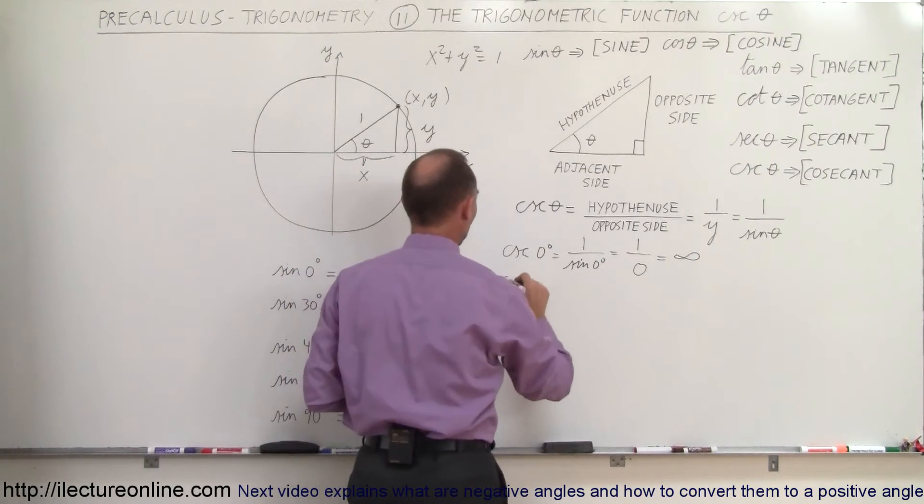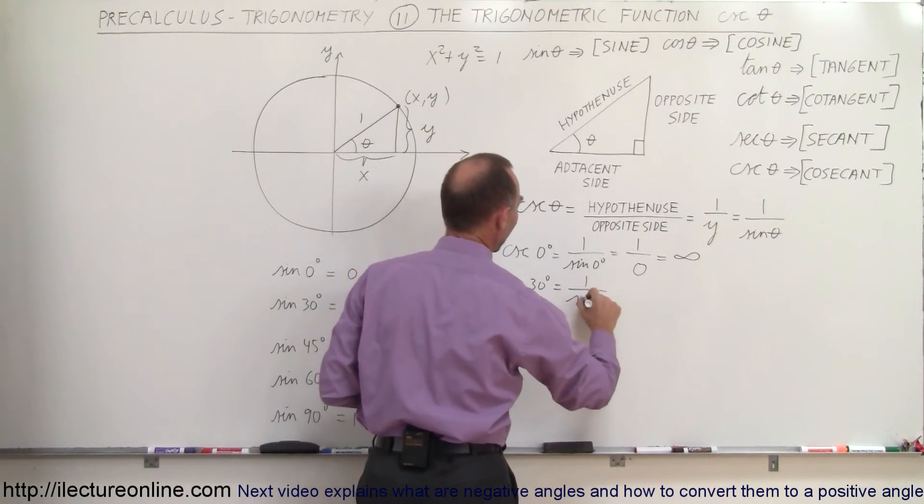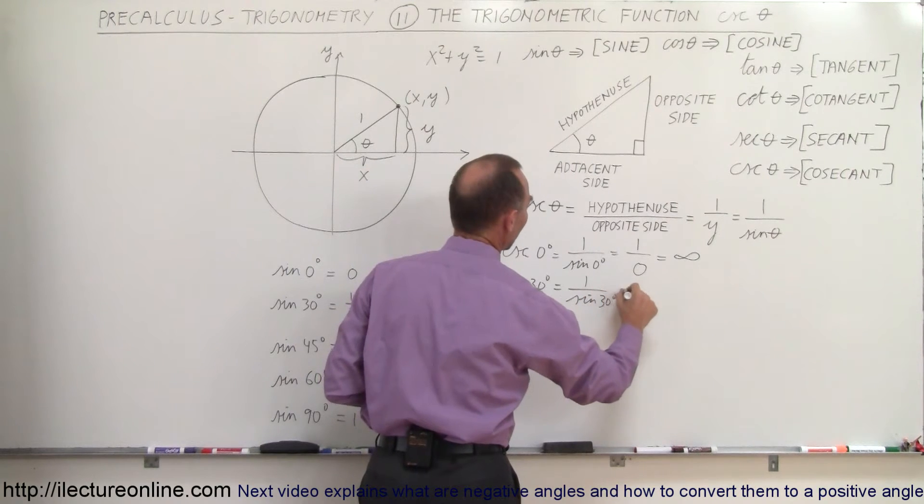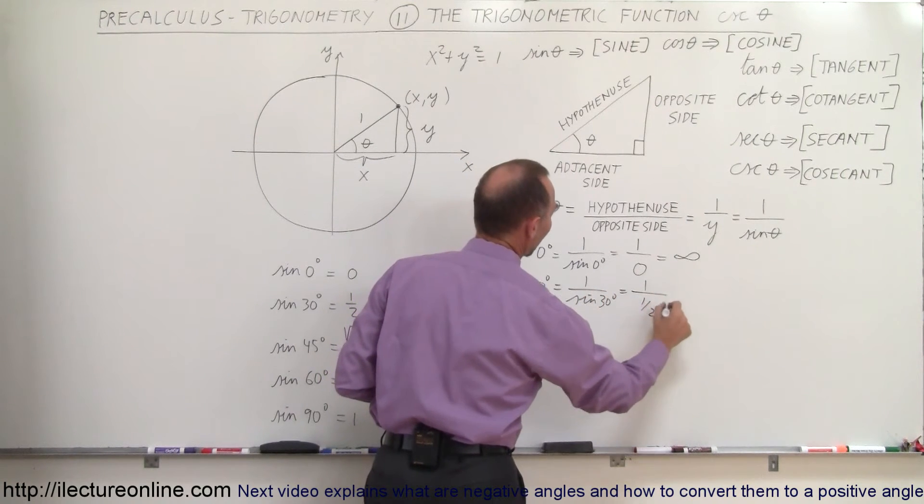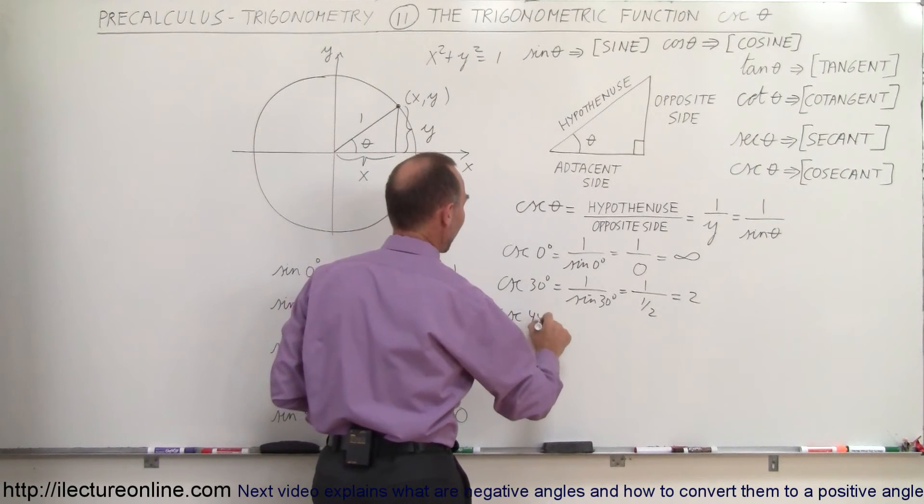Now for other angles, the cosecant of thirty degrees is equal to one divided by the sine of thirty degrees, which is equal to one divided by one-half, which is equal to two.